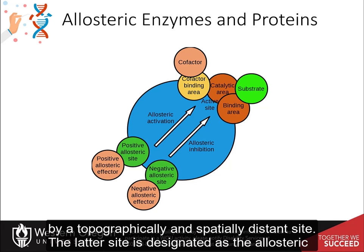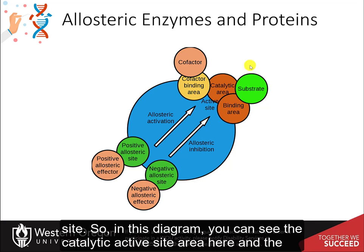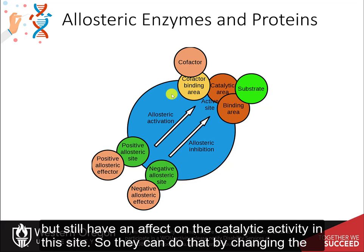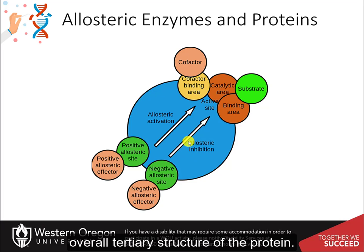The latter site is designated as the allosteric site. In this diagram, you can see the catalytic active site area, and allosteric regulators can bind at a distant site away from that active site but still have an effect on the catalytic activity by changing the overall tertiary structure of the protein.